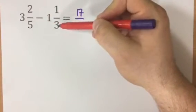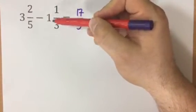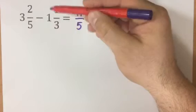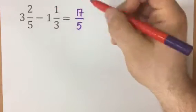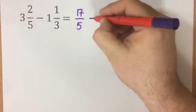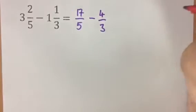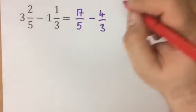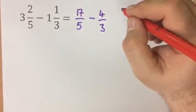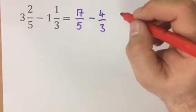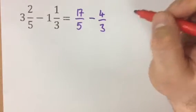Now 1 whole one is the same as 3 thirds, so 1 times 3 is 3, add the 1 gives you 4 thirds. Now before we can do the subtraction, we need to look for a lowest common multiple between 5 and 3.